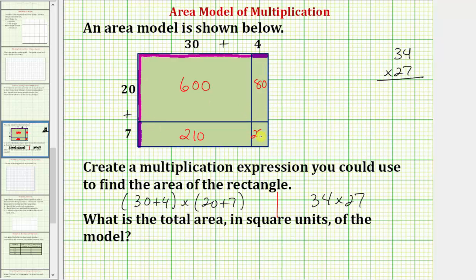So to find the total area, we would add these four areas. So we'd have 600 plus 210 plus 80 plus 28. Adding, we have eight in the ones place value. In the tens we have one plus eight plus two, that's 11. So we'll put a one in the tens place value and a one in the hundreds place value. So six plus two plus one is nine. So the total area is 918 square units.